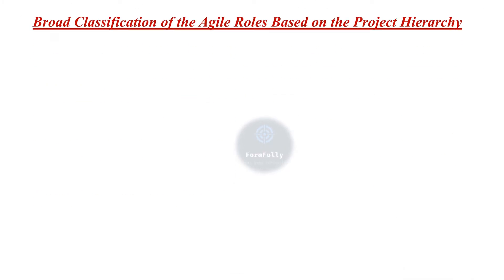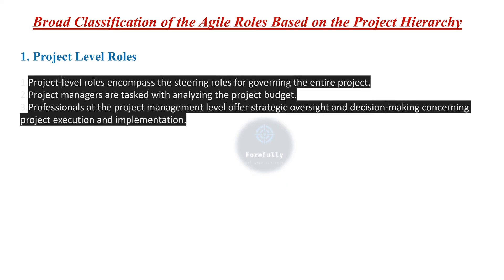Next we will see the broad classification of Agile roles based on the project hierarchy. The first one is project level roles. Project level roles encompass the steering roles for governing the entire project. Project managers are tasked with analyzing the project budget, and professionals at the project management level offer strategic oversight and decision making concerning project execution and implementation.